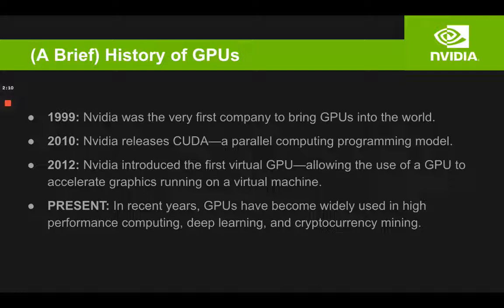In 2012, not much later, we start talking about virtual GPUs, which allow you to use a GPU to accelerate graphics in virtual machines, which can be very useful. Nowadays, GPUs have become widely used in a variety of applications and industries, such as high performance computing, deep learning, and even cryptocurrency mining — because cryptocurrency mining involves a lot of math computations that can be performed in parallel, and therefore GPUs are useful in that industry as well.